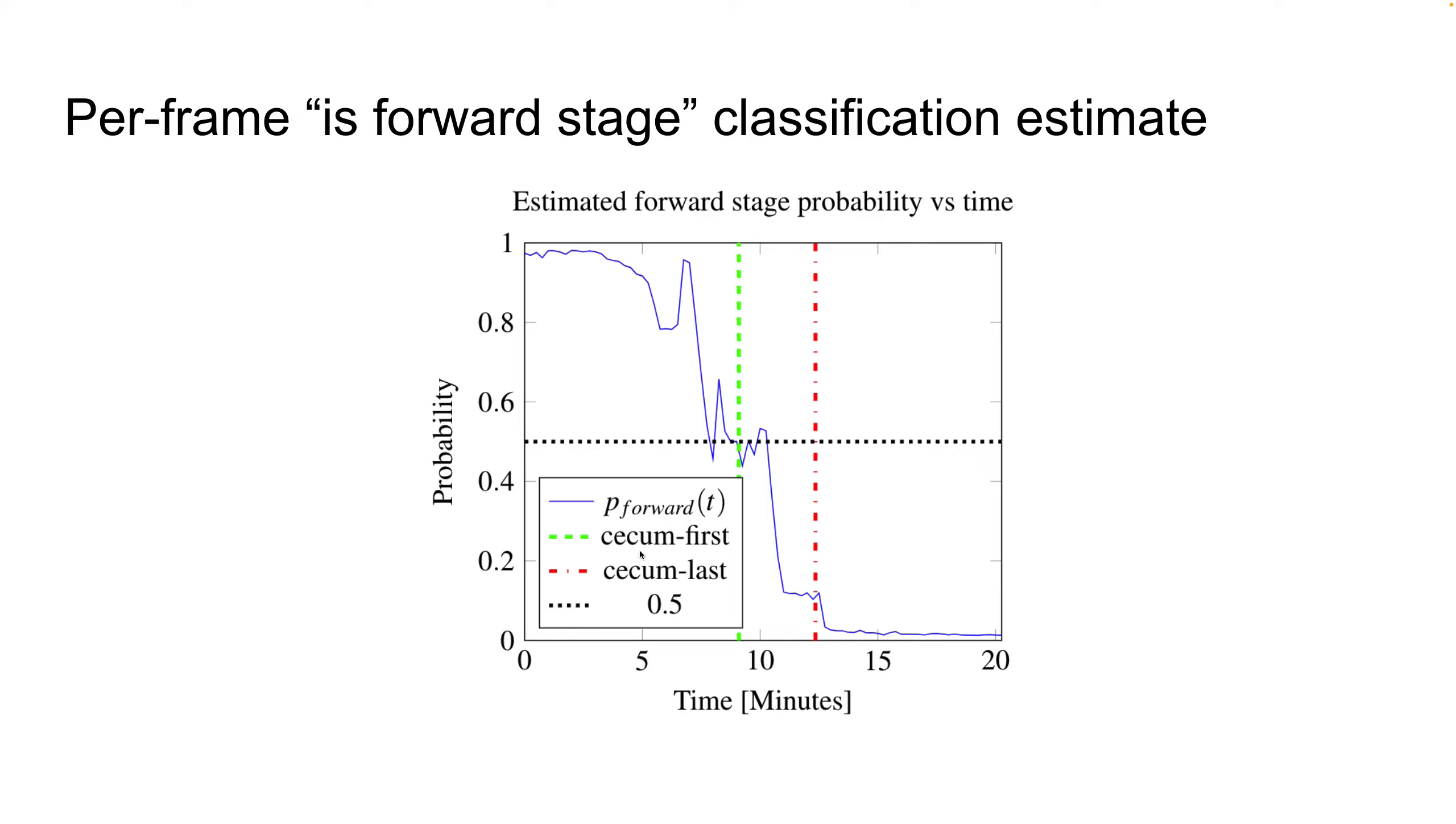We have two very important time points: the green time point, this is where the cecum is first reached, and the red time point in which the cecum is last reached. We also have a horizontal line to mark ambiguity. If the algorithm marks the predicted probability 0.5, it means the algorithm can't tell if this is forward or backward.